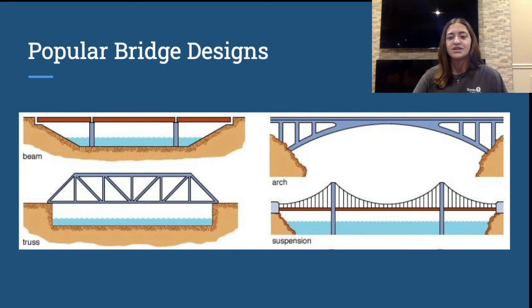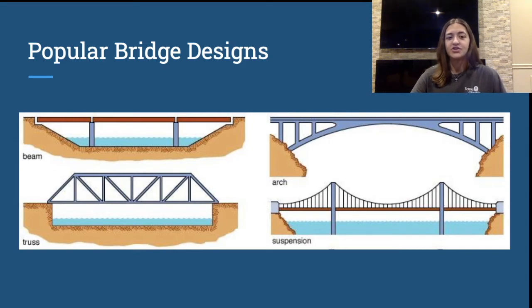If you ever notice cars going under you in a different direction, that means you're driving over a bridge. A bridge doesn't only hover above water — it goes above traffic or other things you need to cross over. Beam bridges are usually standard in these situations because they keep the flow of traffic nice, they're not very distracting, and they're very easy to build.